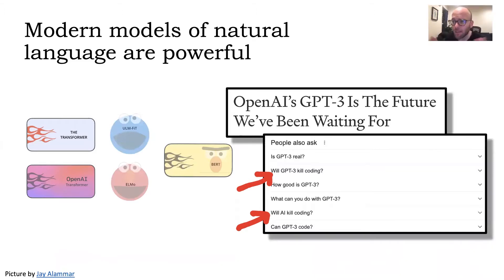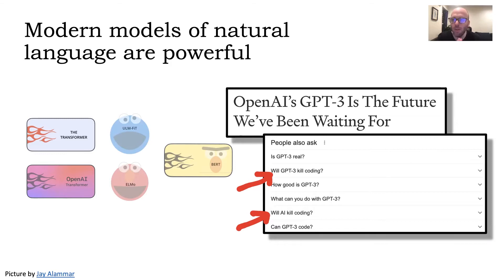This talk is about language models that were originally conceived and designed for natural language, but now they're used for code as well. They have been doing really impressive things lately, getting a lot of attention — excited attention, but also scared attention, because they might replace all programmers or invoke an AGI apocalypse.